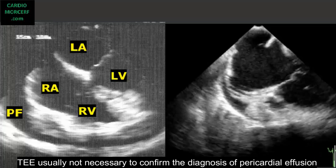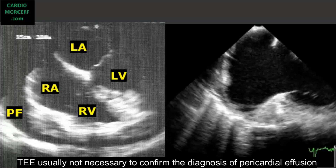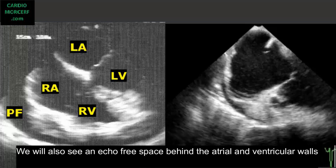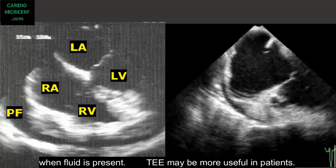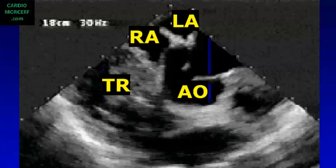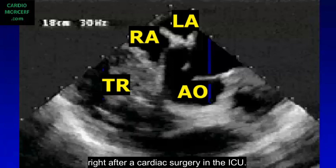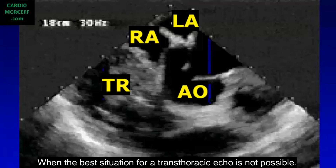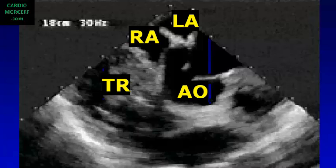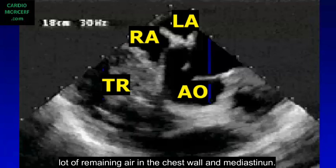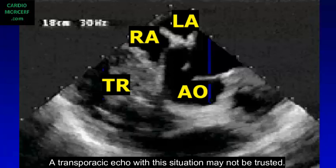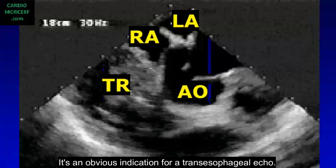TEE is usually not necessary to confirm the diagnosis of pericardial effusion. We will also see an echo-free space behind the atrial and ventricular walls when fluid is present. TEE may be more useful in patients right after cardiac surgery in the ICU, when optimal transthoracic echo is not possible. The patient may be draped with several thoracic tubes, a large surgical wound, and remaining air in the chest wall and mediastinum. A transthoracic echo in this situation may not be trusted, making transesophageal echo an obvious indication.